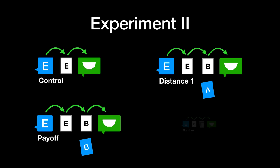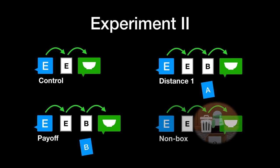We also thought it would be interesting to see what people thought of off-task actions that were completely unrelated to the task, so we also compared against a video of the robot detouring to check a trash can.